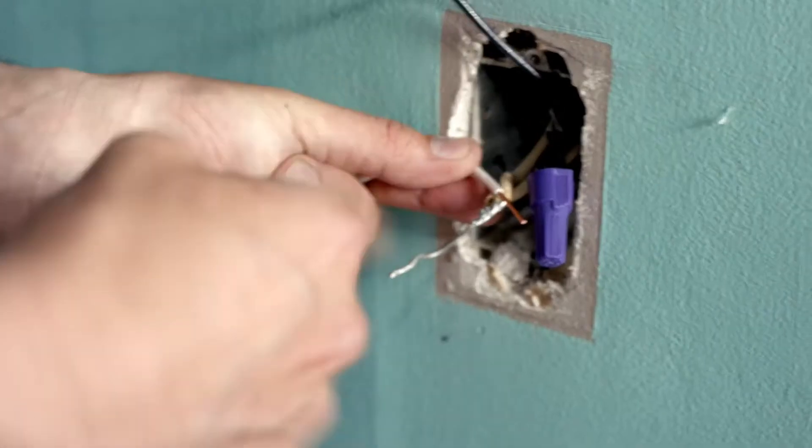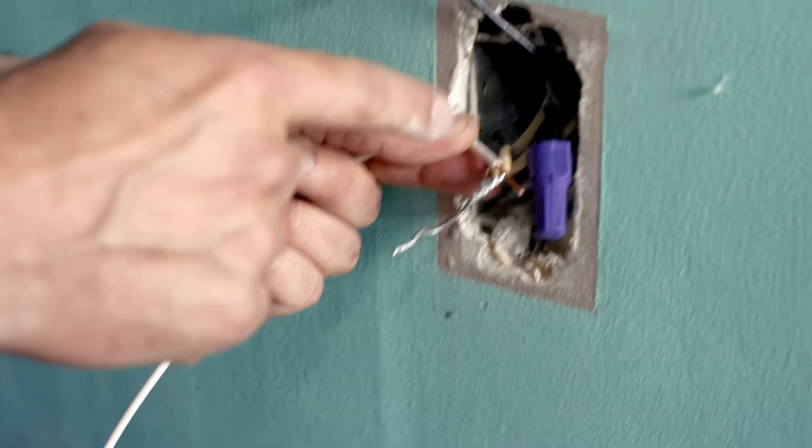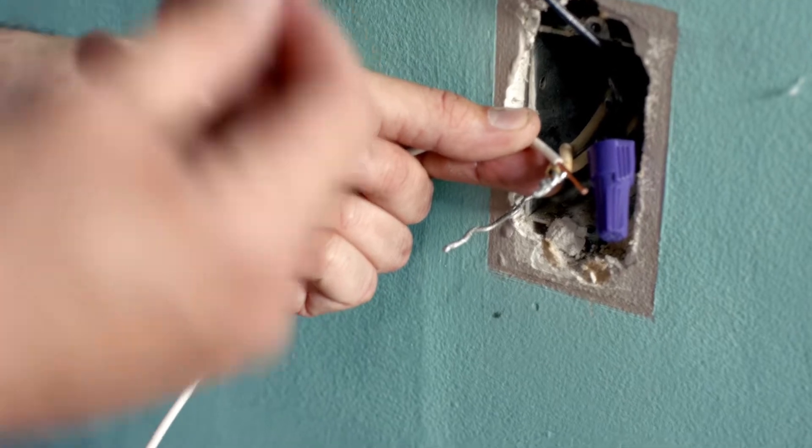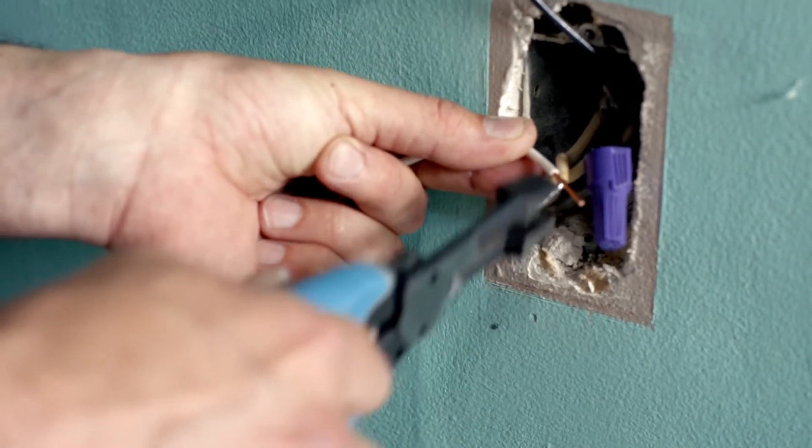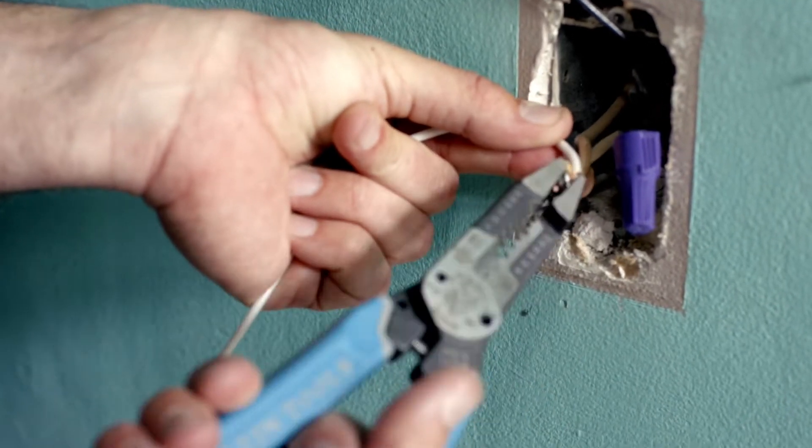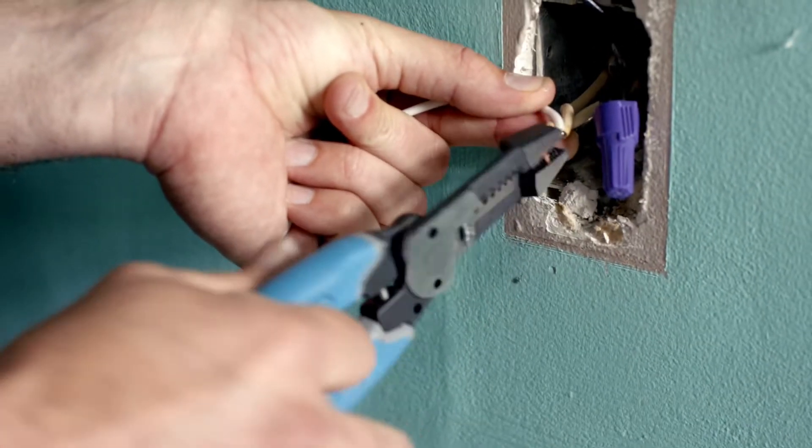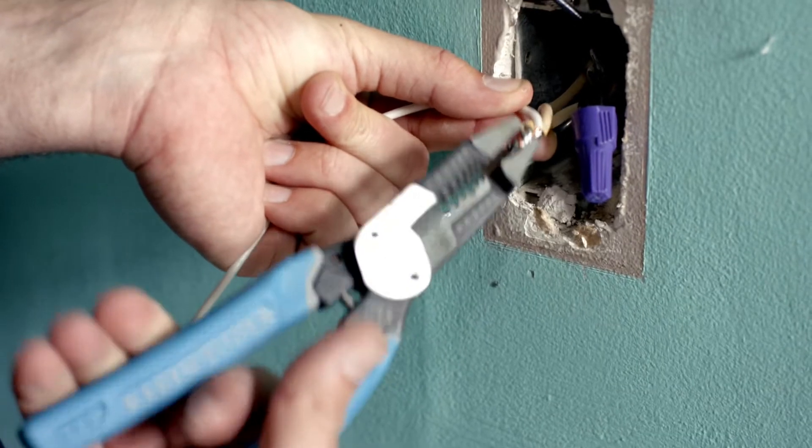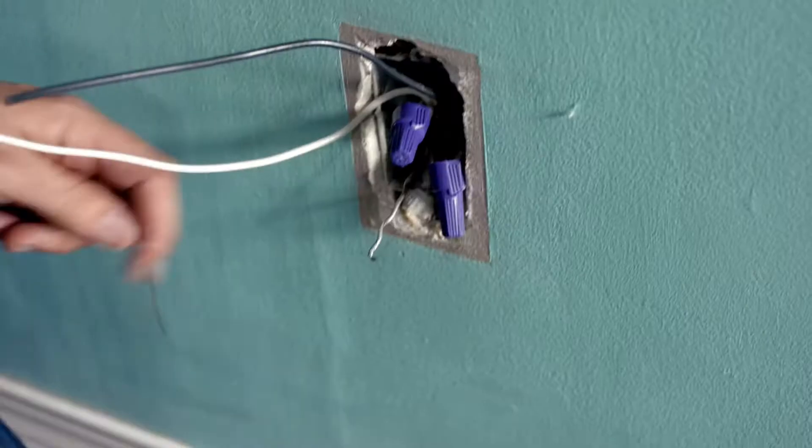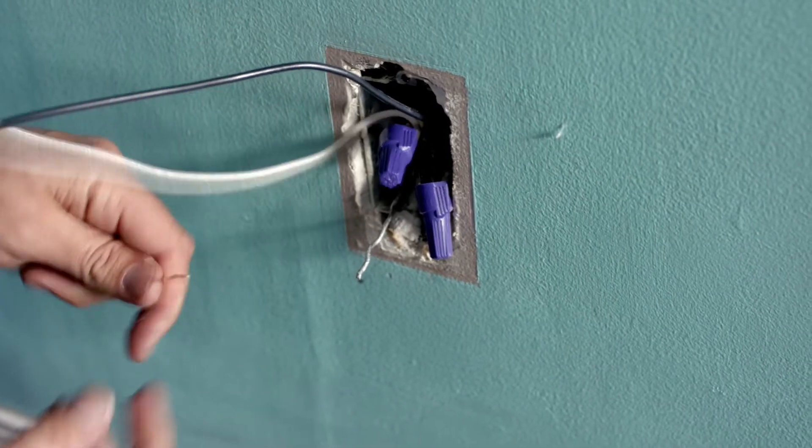When you're splicing these on, make sure that the aluminum is spliced together first. It's a lot more pliable, so it's going to be harder to get them all together to go in. Then just wrap your copper around the line. Now we want to do our ground, which is aluminum.